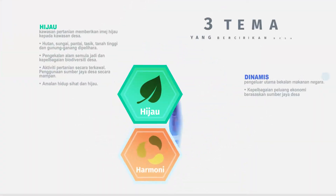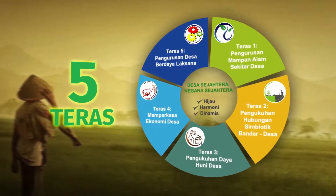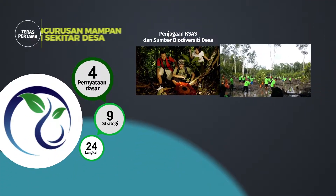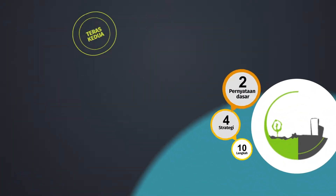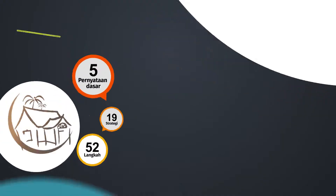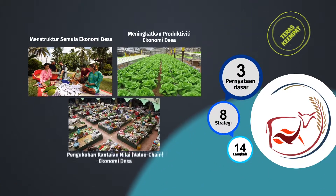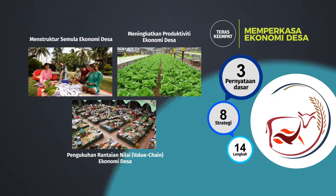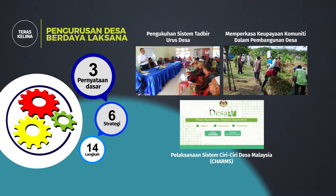Terdapat 3 tema yang bercirikan desa. Berdasarkan kepada 3 tema tersebut, DPF Desa Negara digubal berdasarkan kepada 5 teras. Teras pertama mengandungi 4 dasar, 9 strategi dan 24 langkah berkenaan dengan pengurusan mampan alam sekitar desa. Teras kedua disokong oleh 2 dasar, 4 strategi dan 10 langkah berkaitan dengan pengukuhan hubungan simbiotik bandar desa. Teras ketiga berkenaan dengan pengukuhan daya huni desa yang menggariskan 5 dasar, 19 strategi dan 52 langkah. Teras keempat mengandungi 3 dasar, 8 strategi dan 14 langkah berkaitan dengan memperkasa ekonomi desa. Teras kelima adalah mengenai pengurusan desa berdaya laksana yang mengandungi 3 dasar, 6 strategi dan 14 langkah.